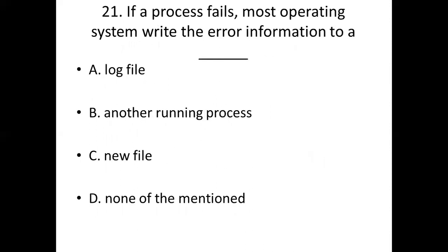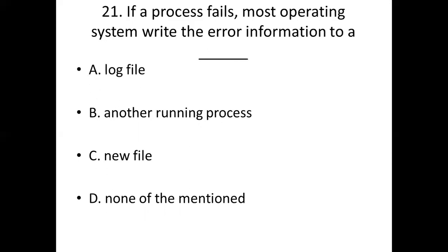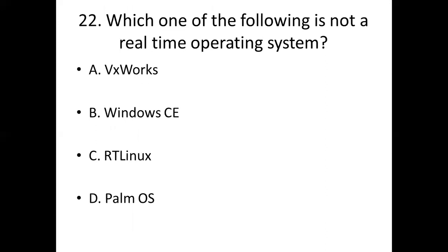Twenty-first bit: If a process fails, most operating systems write the error information to a dash. Option A: Log file. Option B: Another running process. Option C: New file. Option D: None of the mentioned. Answer: Option A, log file.